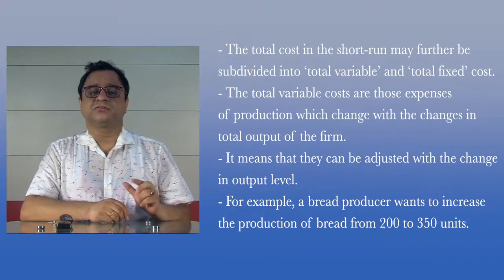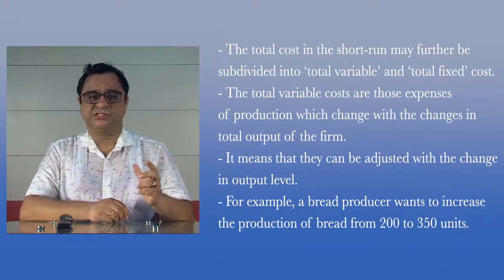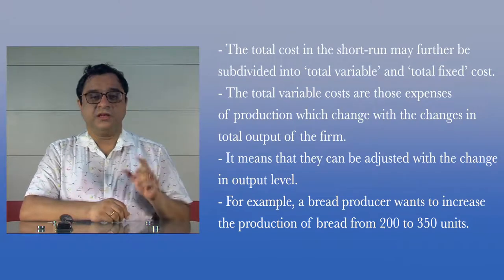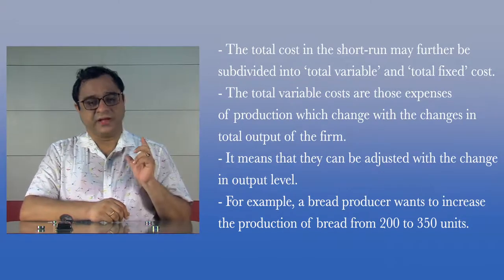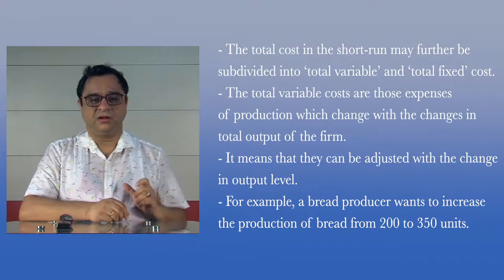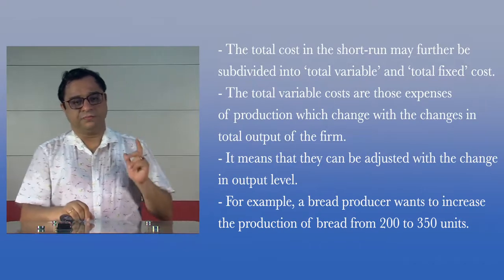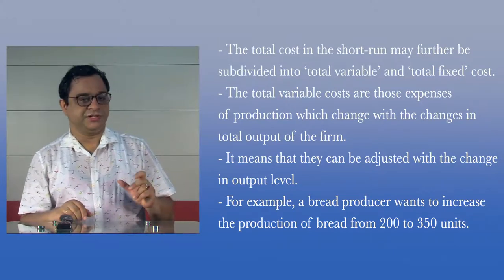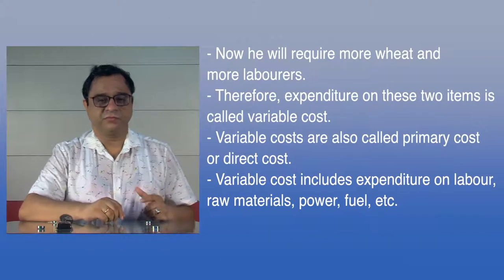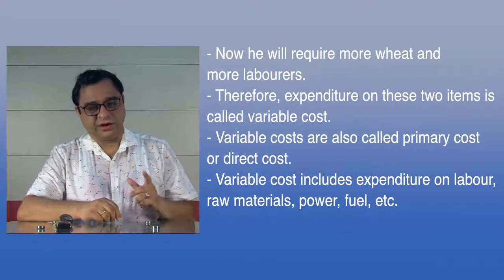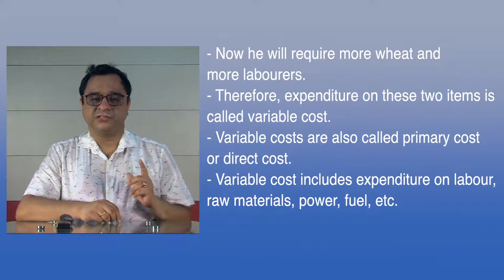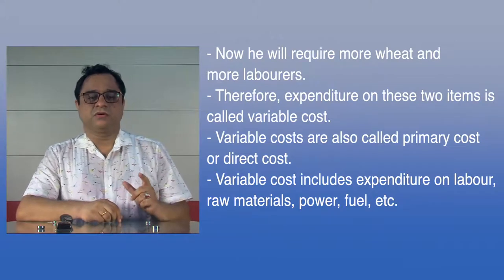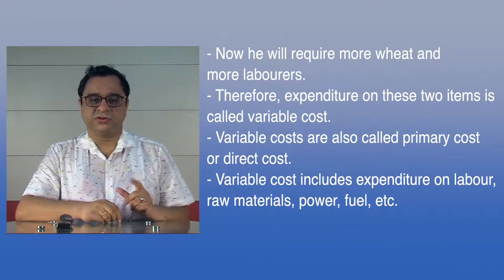The total variable costs are those expenses of production which change with the changes in total output of the firm. It means that they can be adjusted with the changes in output level. For example, a bread producer wants to increase the production of bread from 200 to 350 units. He will require more wheat and more laborers. Therefore, expenditure on these two items is called variable cost. Variable costs are also called prime cost or direct cost.